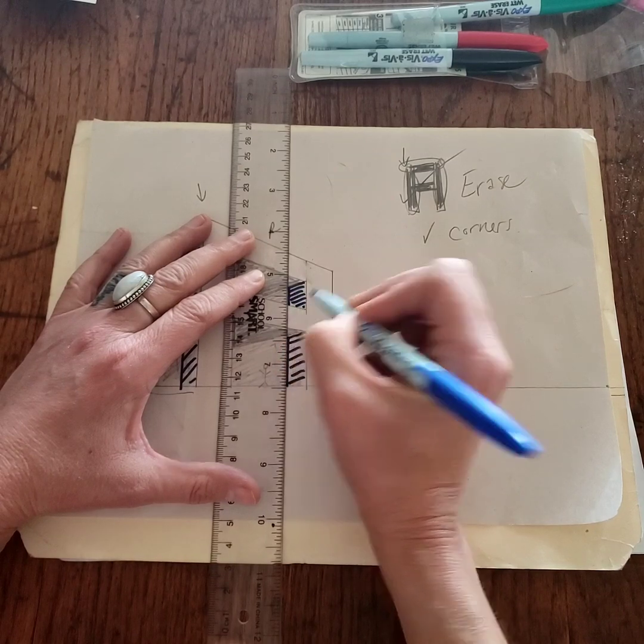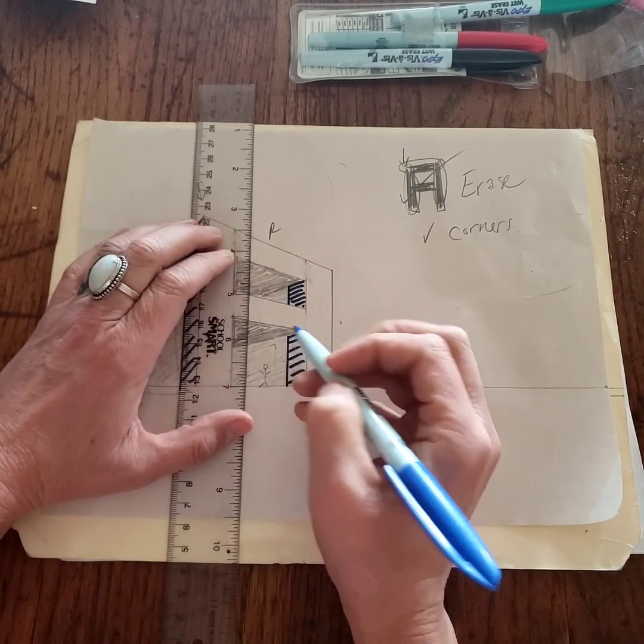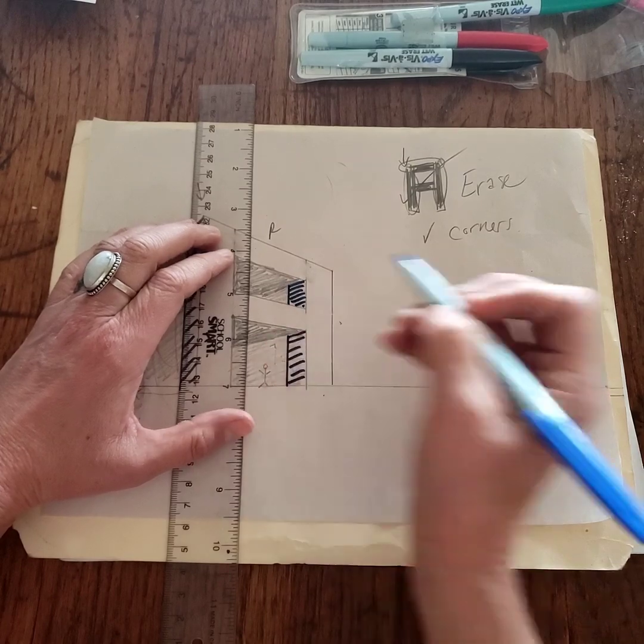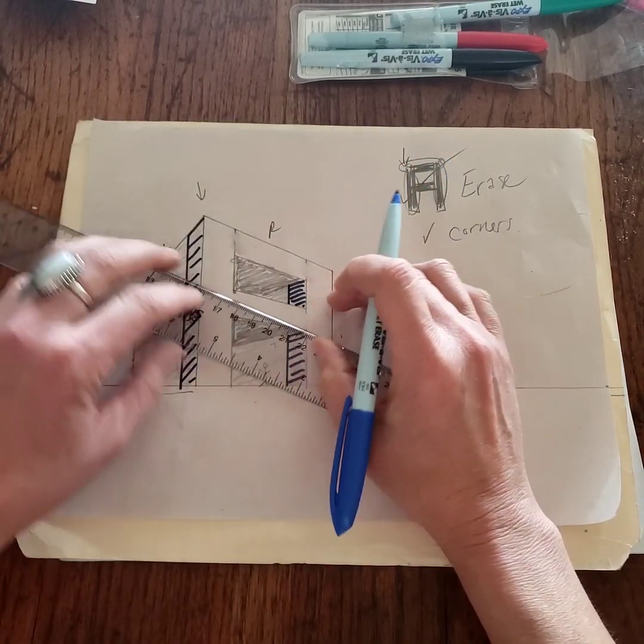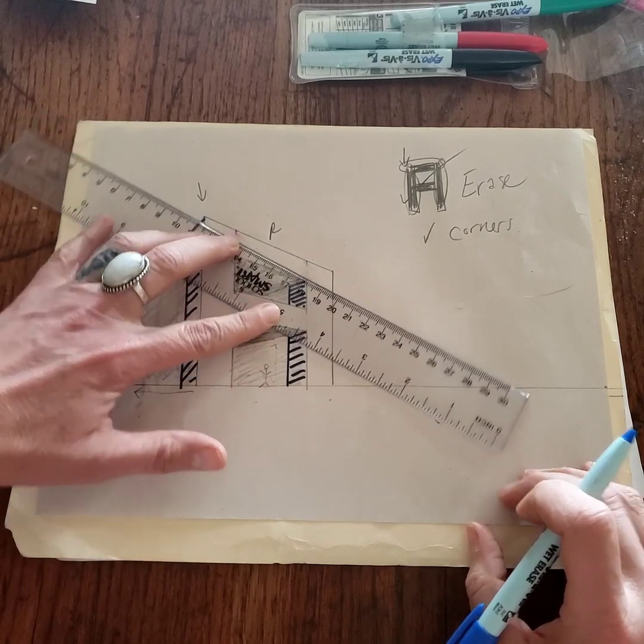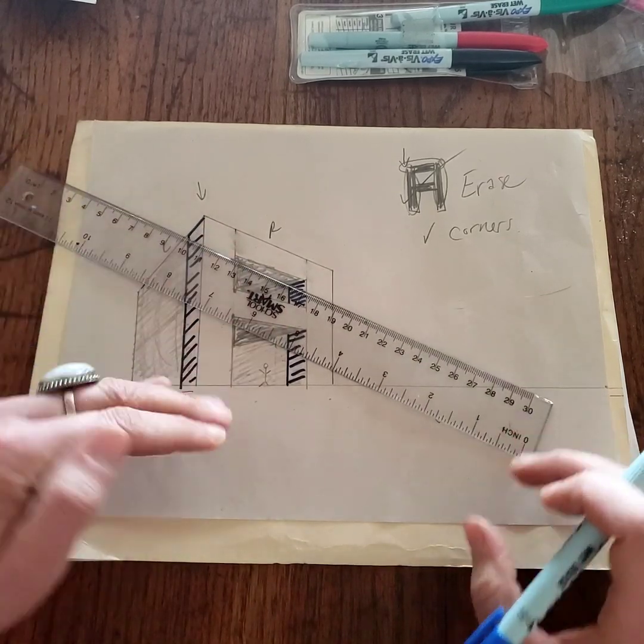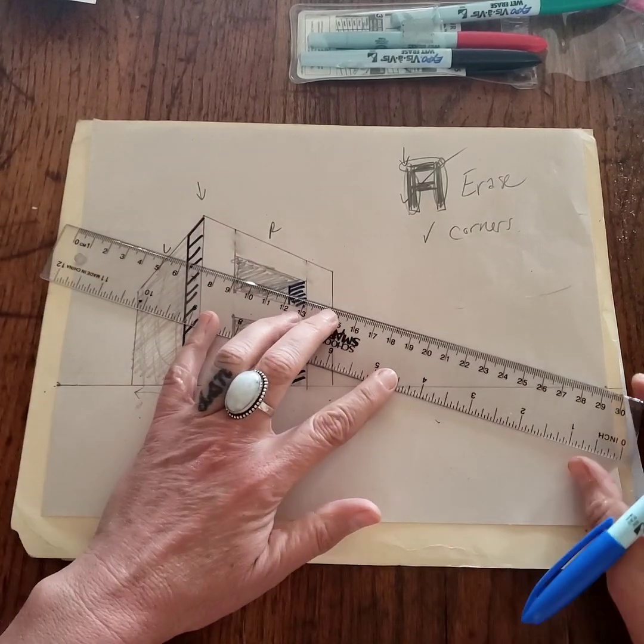There's the side, but notice now we have a corner, an inside corner we have to deal with. It's angling this way. You know it's angling from the upper left to the lower right. Well, that means we have to use the right vanishing point.